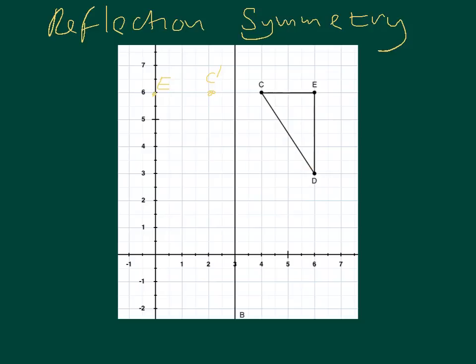And finally, we'll come down to D. D is in line with E, so it will be 3, 1, 2, 3 from the symmetry line, and across 3, 1, 2, 3. And we can draw that in, D dash, and then we can join up and get our reflection.